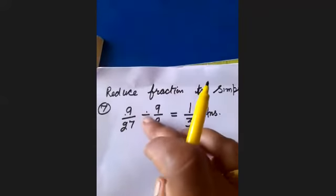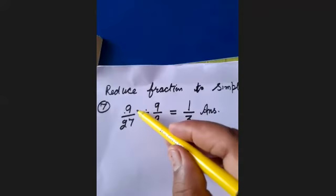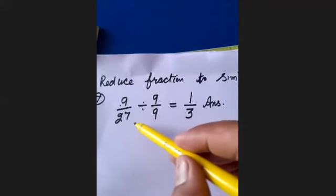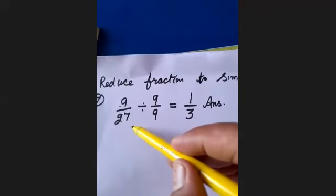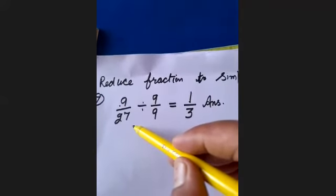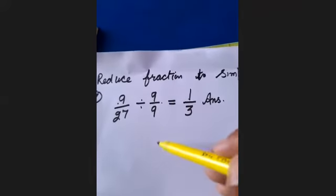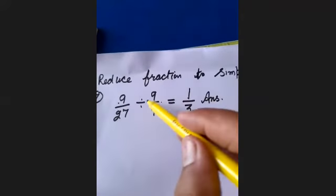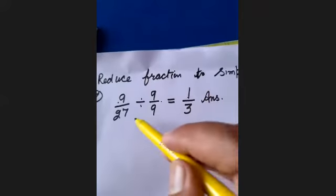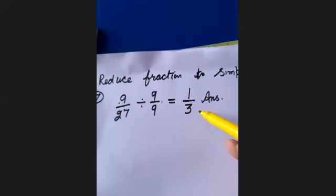The simplest form of 9 upon 27 is 1 upon 3, because both numerator and denominator are multiples of 9. Dividing both by 9: 9 divided by 9 is 1, and 27 divided by 9 is 3.